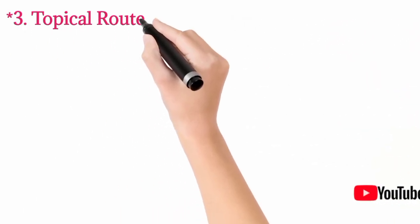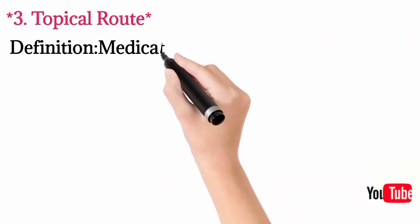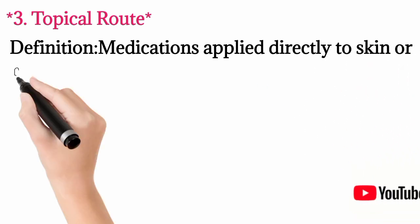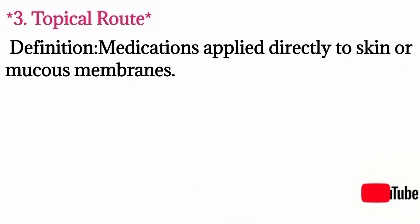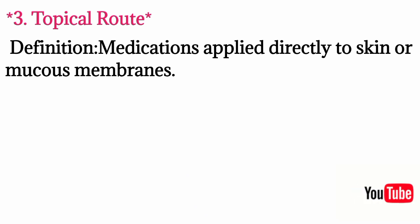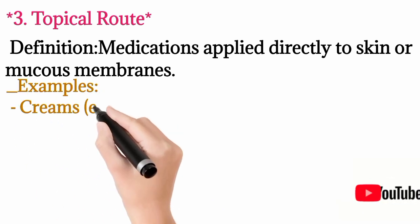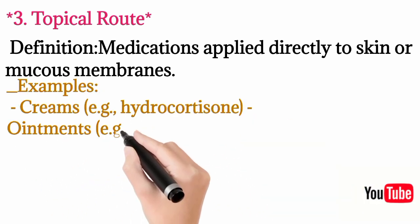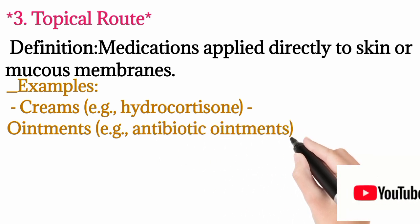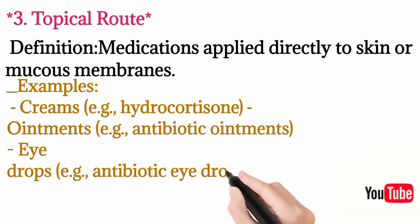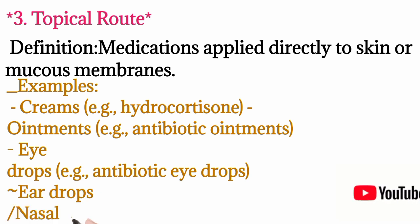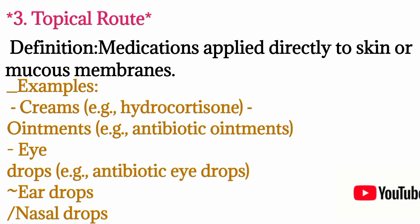Then we will discuss another route: the topical route. Topical route simply means that medication will be applied to the skin or mucosa — the mucous membrane or skin. Examples of drugs given through the topical route include creams and ointments, for example hydrocortisone cream, various antibiotic ointments for wounds, eye drops applied to the eye mucosa, ear drops applied to the ear mucosa, and nasal drops applied to the nasal mucosa. All these are considered among the topical route, including various creams, ointments, and drops.